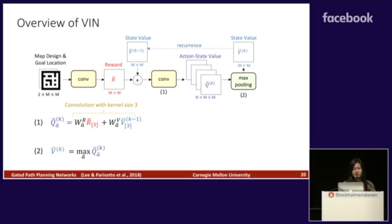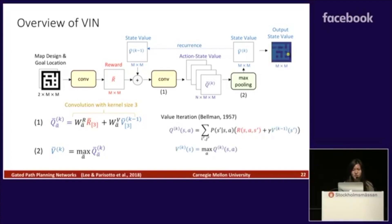In the next iteration, we use this new state value to compute equation 1 again, and we repeat this recurrent computation loop for some number of iterations. Finally, we output the last state value, which is a heat map over the maze design. Note that equations 1 and 2 resemble the classic value iteration algorithm. The VIN architecture was designed to mimic the application of value iteration on a 2D grid world, and has the advantage of being differentiable, whereas the classic algorithm is not.